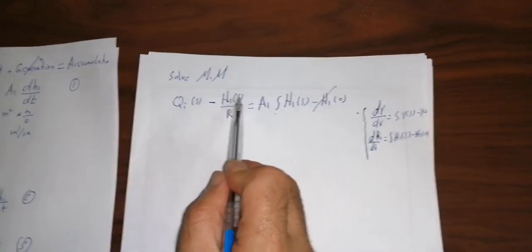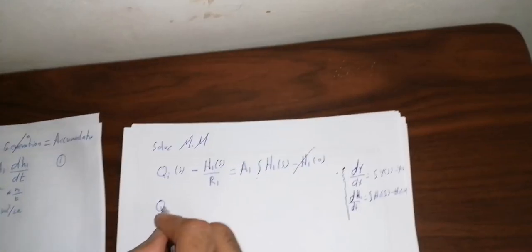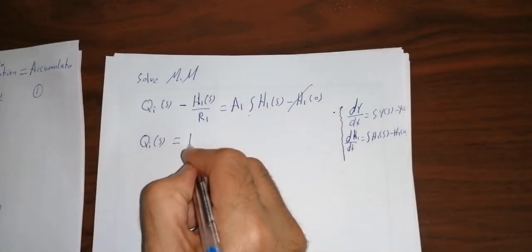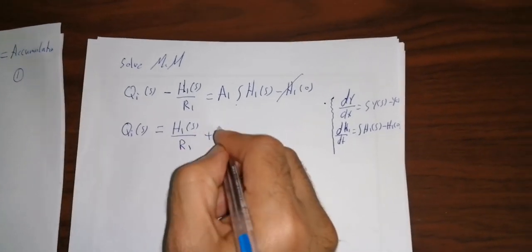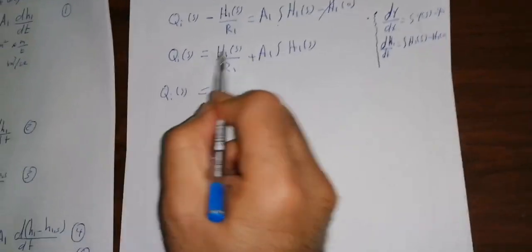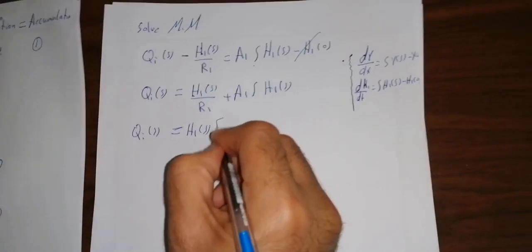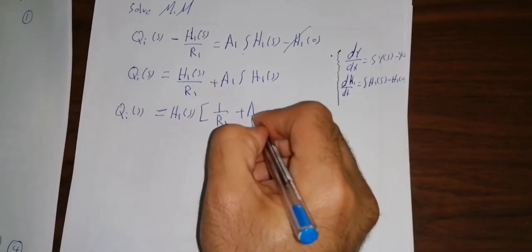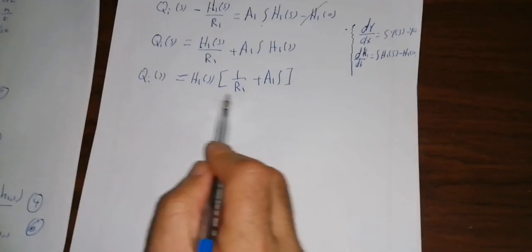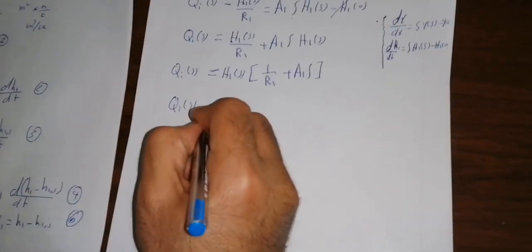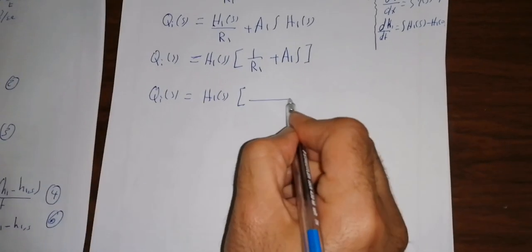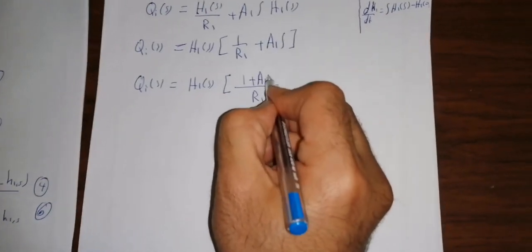Rearranging, we move H̄1(s)/R1 and the A1*s*H̄1(s) terms together: H̄1(s)/R1 plus A1*s*H̄1(s) equals Q̄I(s). Factoring out H̄1(s): H̄1(s) * (1/R1 + A1*s) equals Q̄I(s). This simplifies to H̄1(s) * (1 + A1*R1*s)/R1 equals Q̄I(s).